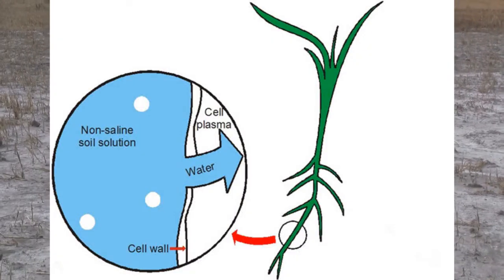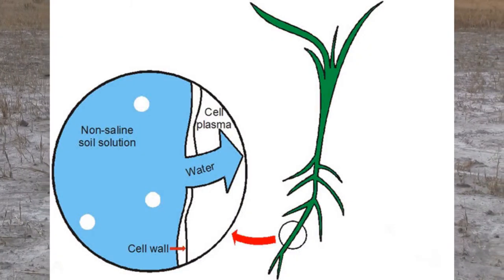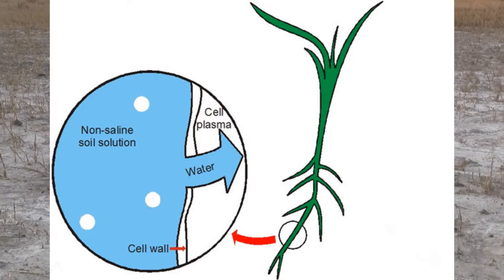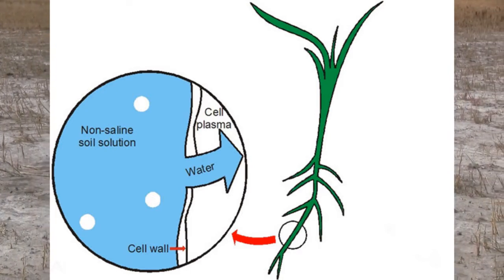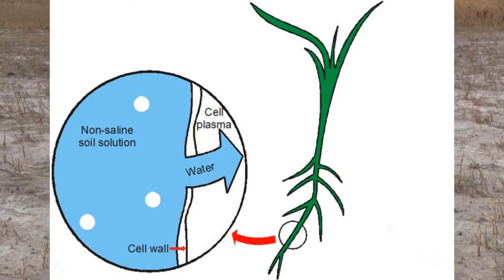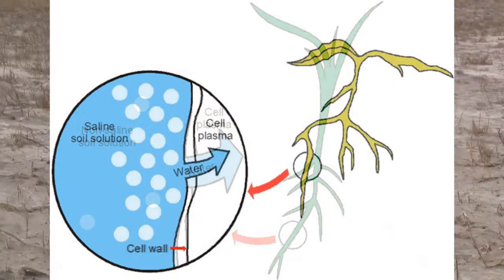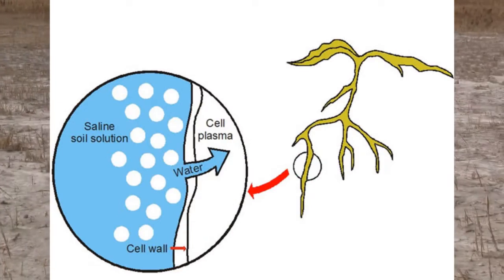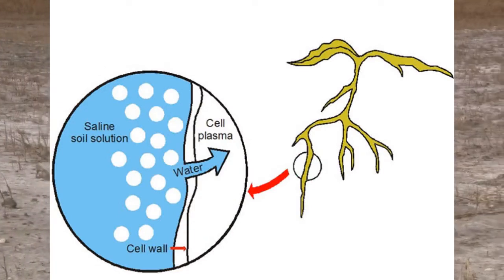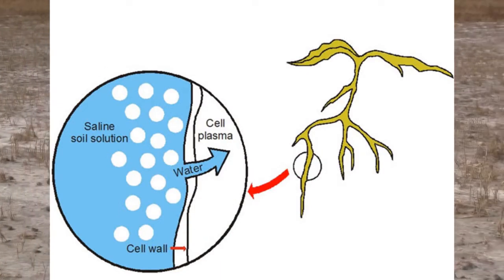How do these problems affect crops? Excessive soluble salts deprive the plant roots from uptaking soil water, even under wet conditions, causing drought-like symptoms. That process is called osmosis.